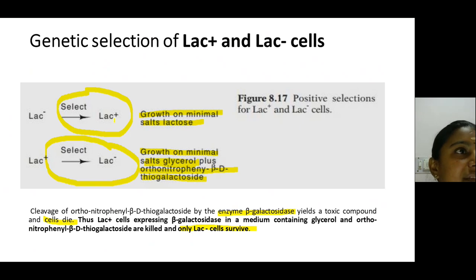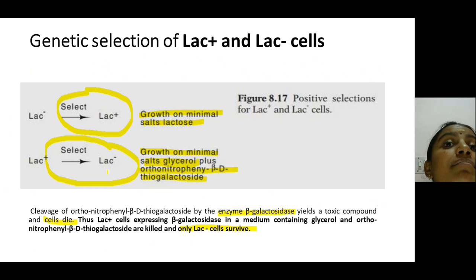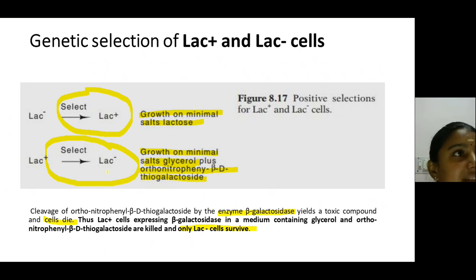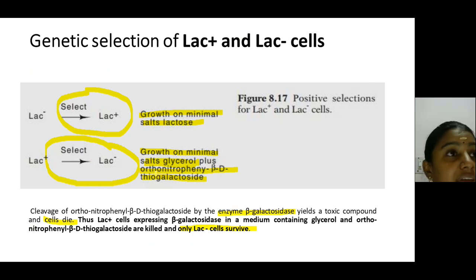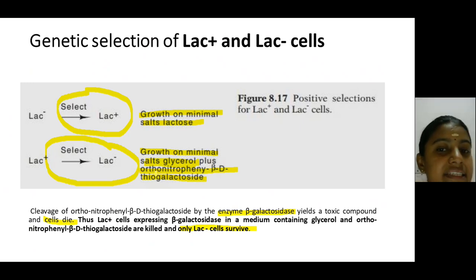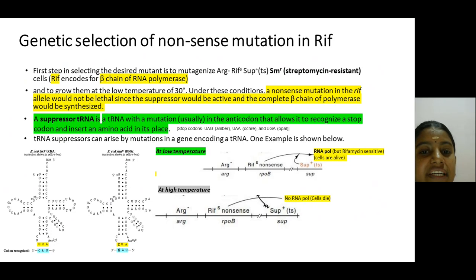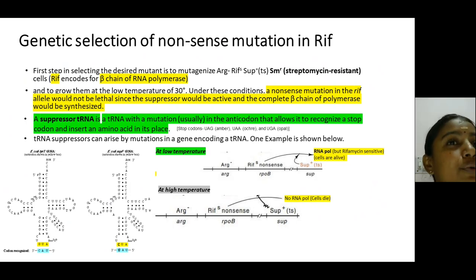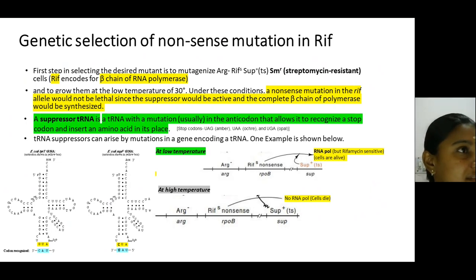In summary: to genetically select lac-plus cells, use minimal salt medium containing lactose. To genetically select lac-minus cells — those not producing beta-galactosidase — add ortho-nitrophenyl-beta-D-thiogalactoside to minimal medium containing glycerol. The next genetic selection example is quite complex, but understanding these genetic selection mechanisms helps review many fundamental molecular biology concepts. Some terminology will be introduced before proceeding.